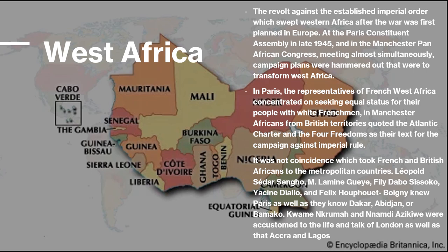Now we're going to look at West Africa. The revolt against the established imperial order, which swept Western Africa after the war, was first planned in Europe. At the Paris Constituent Assembly in late 1945, and at the Manchester Pan-African Congress meeting almost simultaneously, campaign plans were hammered out that were to transform West Africa. In Paris, the representatives of French West Africa concentrated on seeking equal status for their people with white Frenchmen. In Manchester, Africans from British territories quoted the Atlantic Charter and the Four Freedoms as their text for the campaign against imperial rule.